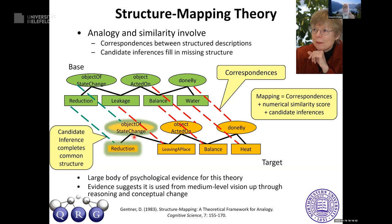Analogy tells you what goes with what, which helps you spot differences, and tells you how to complete a pattern. The Structure Mapping Engine also computes a numerical similarity value — the kind people actually use for judging similarity — from the same computation. There's a large body of psychological evidence for this theory covering medium-level vision through reasoning and conceptual change, and now computational models that capture many of the same phenomena.